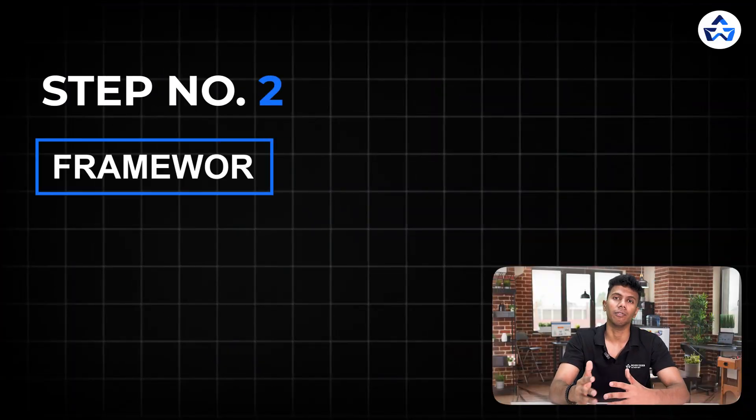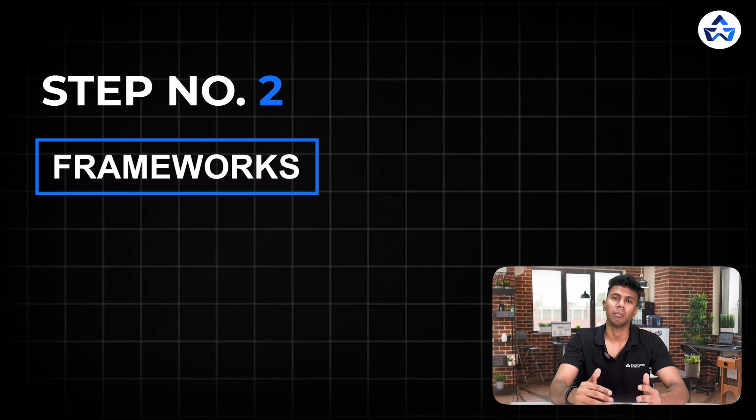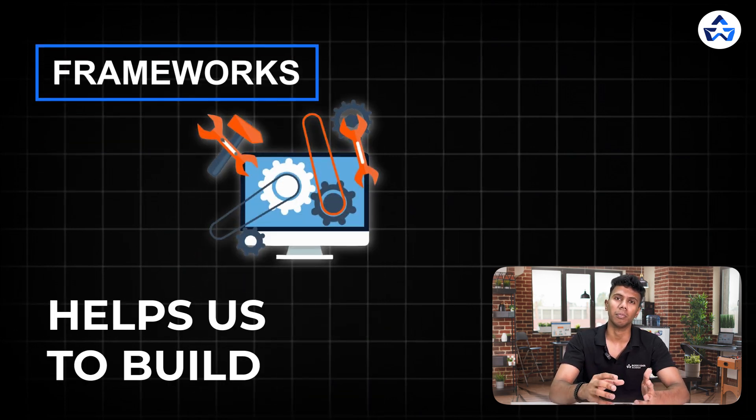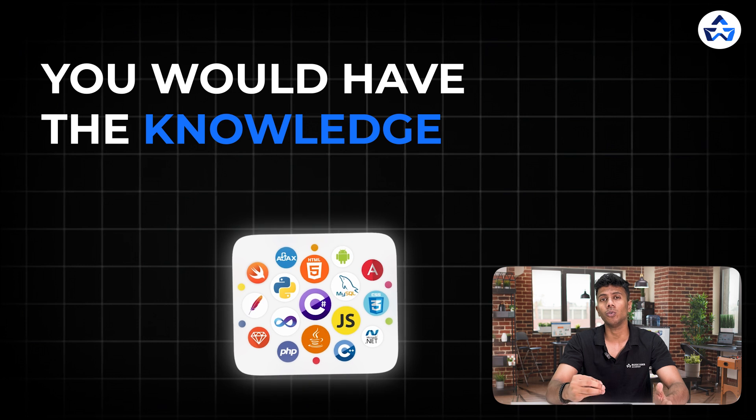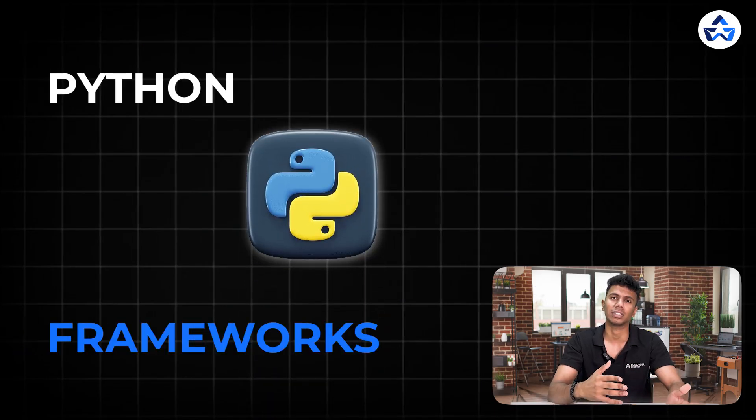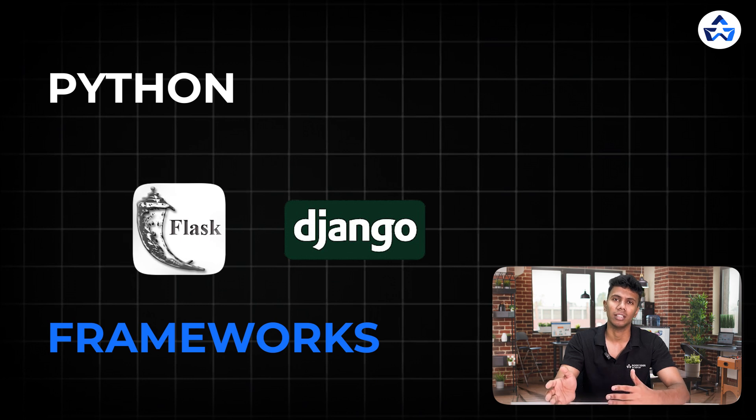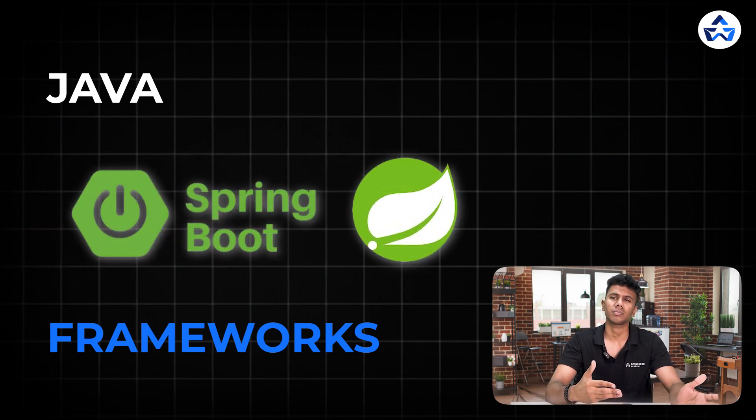Moving to the second step — frameworks. After selecting a language, frameworks are a very important part. You would have knowledge of the language, but you need a tool to actually build with it. A framework helps us build something out of a particular language. For Python, there are frameworks such as Django and Flask. For Java, we have Spring and Spring Boot. For JavaScript, we have Node.js. It depends on which language you're most comfortable with and what your use case is for backend development.